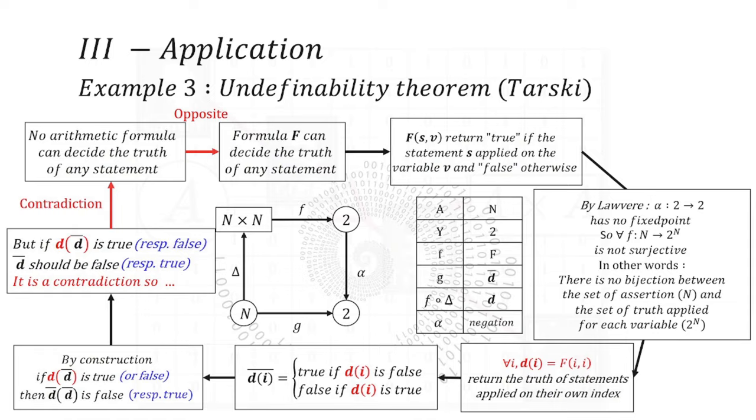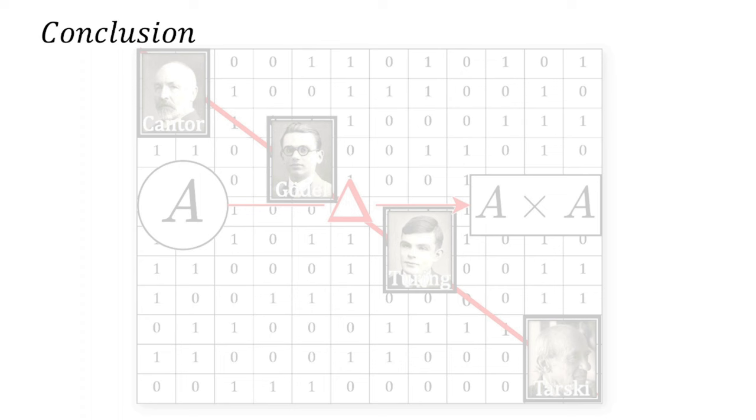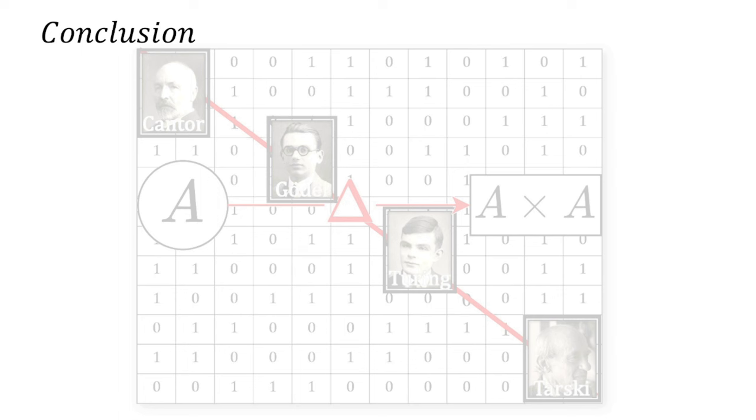Okay, so proofs are over. It's now time to step back and think about what we have seen. Diagonal arguments all state something different but in the same way. It seems that the only change are the initial context on which you apply it. I've recently read a summary in one line of diagonal argument. I think it can make sense to you now. It says, when you apply diagonal argument on a system, you are telling it, predict something about yourself and do the opposite.